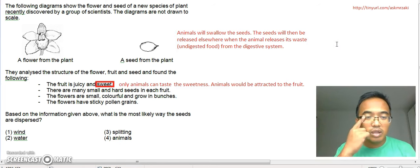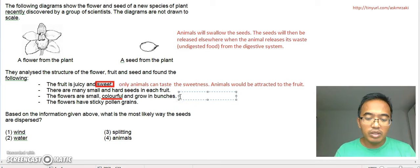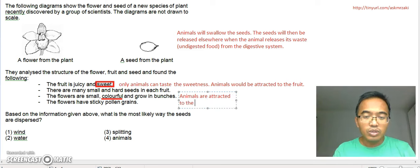The flowers are small, colorful, and grow in bunches. So again, the keyword here is colorful. Again, only animals can see and be attracted to the colors. So the plant makes its flowers colorful so that animals are attracted to them.